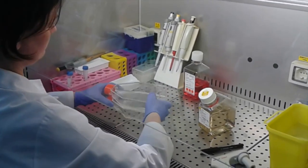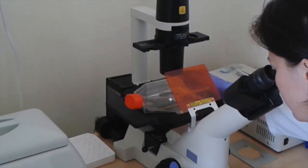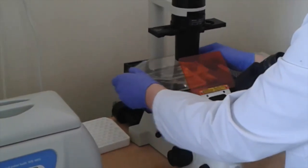Then the cells are visualized with the inverted microscope. Here we can see an orange plastic glass that is used for eye protection in the case of using fluorescence lamp.